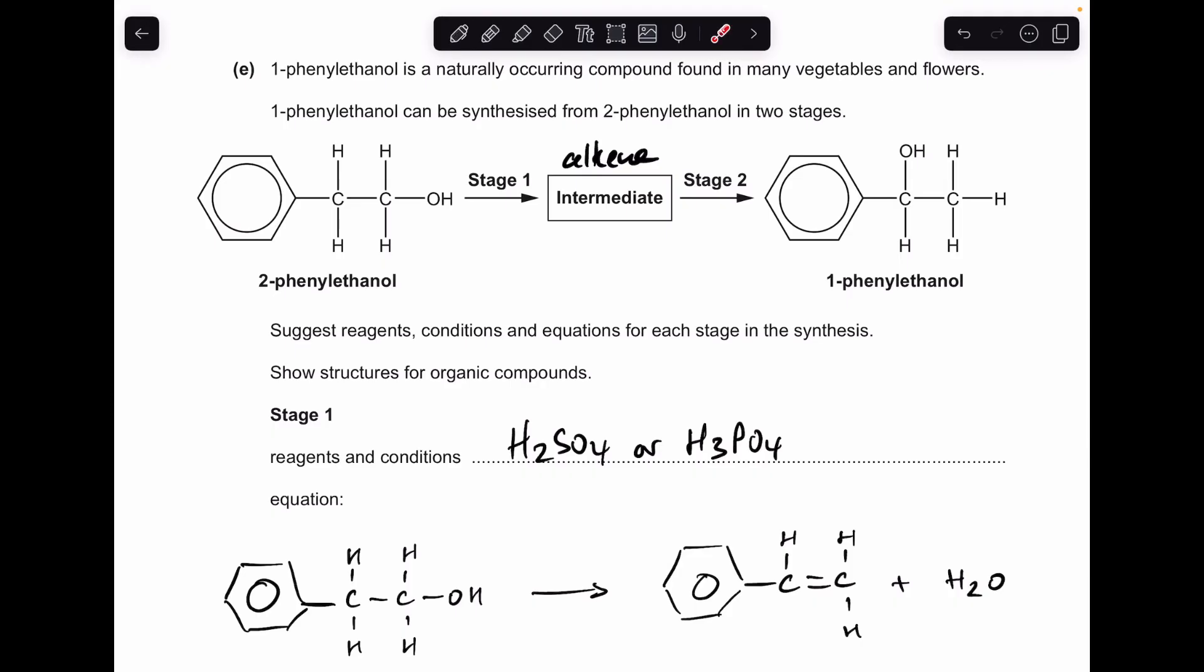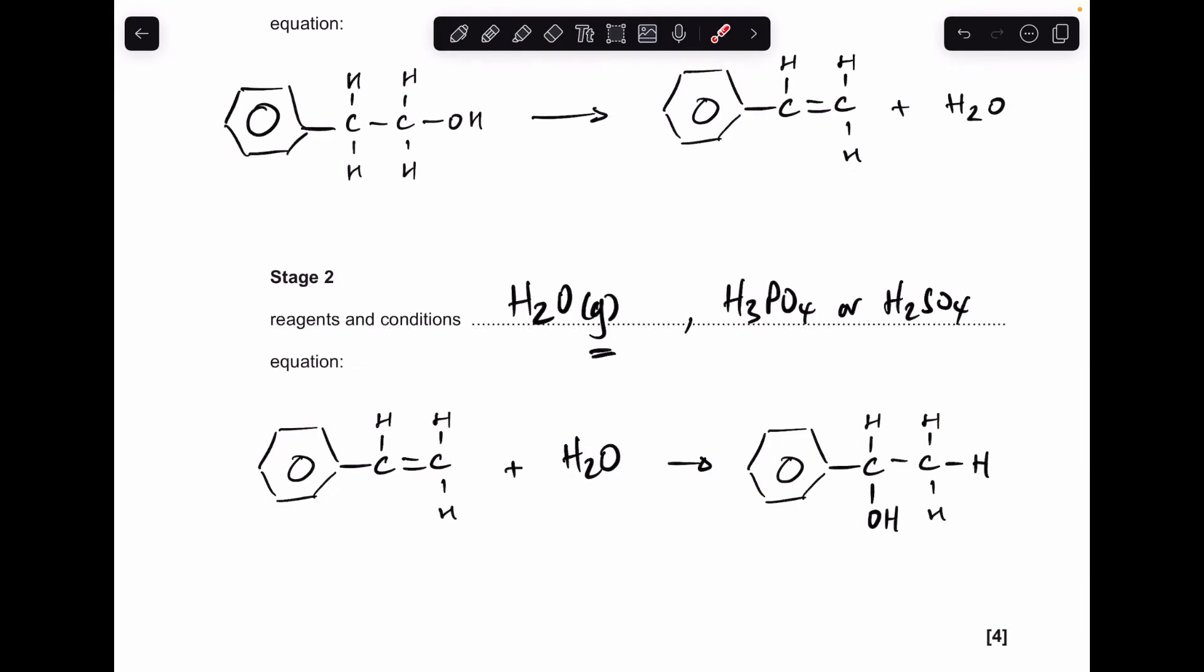For stage two we need to turn this alkene into the alcohol, so we're going to react it with steam and we're going to use an acid catalyst, so we've got to go for either of those again. There's that written up there. Now you'll notice I've written H2O with the gaseous state symbol implying that it's steam. If you didn't do that you could just say H2O and a temperature greater than 100 degrees C, that would be absolutely fine as well.